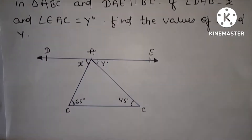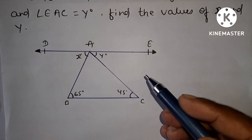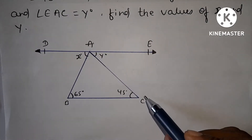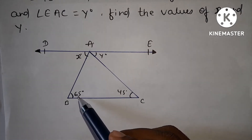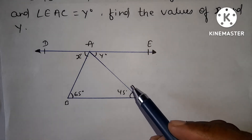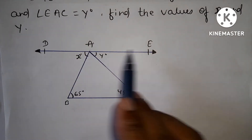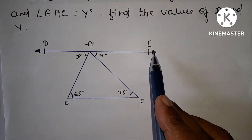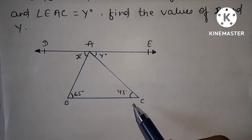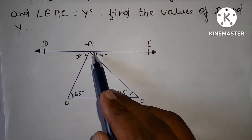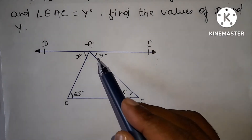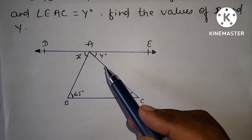ठीक है तो देखते हैं — question देखो, आपका क्या है: ABC एक triangle है जिसमें angle B जो है 65 degree है, angle C जो है 45 degree है। और आपका DAE जो है straight line है जो कि BC line के parallel है। और आपका DAB जो है x angle है और EAC जो है y degree angle है।